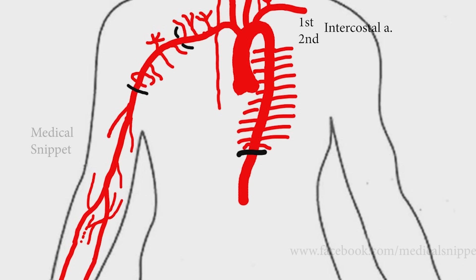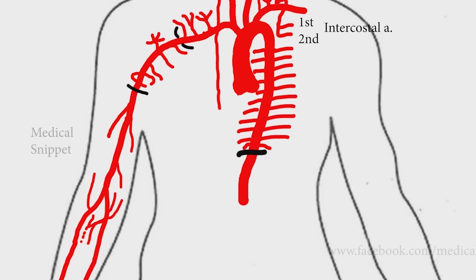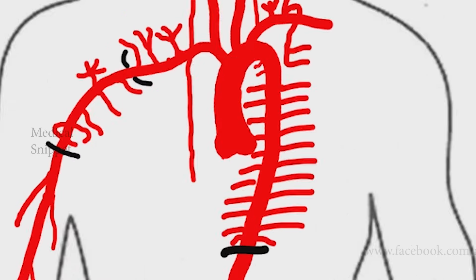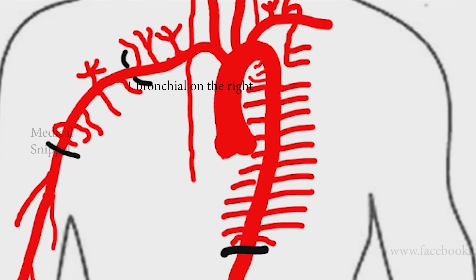The first and second intercostal arteries arise from the superior intercostal artery, which is a branch of the costocervical trunk of the subclavian artery. The other branches of the descending thoracic aorta are the esophageal, mediastinal, and bronchial arteries. There are two bronchial arteries on the left and one on the right.